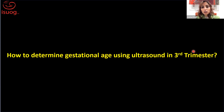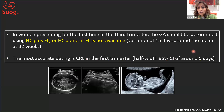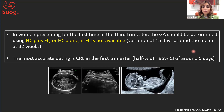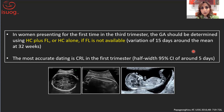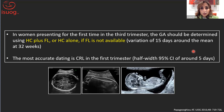How do we determine gestational age using ultrasound in the third trimester? We know the most accurate dating method is crown-rump length in the first trimester, with a range of about five days. If the pregnancy has been dated in the first trimester, you should not re-date it. But if the woman presents for the first time in the third trimester, you can determine gestational age using head circumference plus femur length, or head circumference alone if femur length is not available.